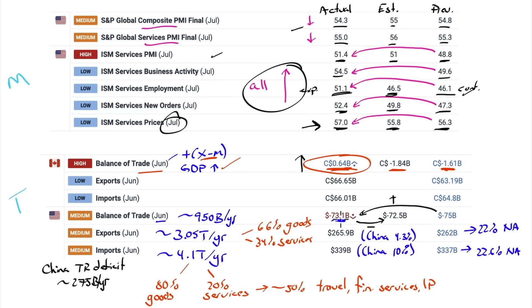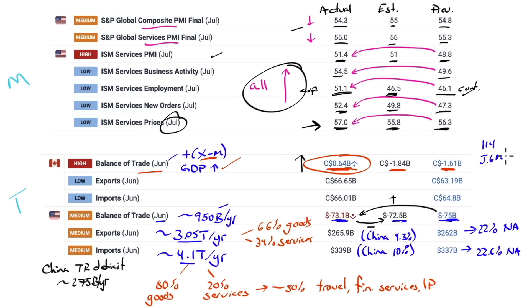The US trade deficit runs about $950 billion a year. Exports are about $3 trillion, imports about $4 trillion, so there's a lot of activity below the surface. Same with jobs numbers - when we say 114,000 jobs were created, under the surface you have something like 5.6 million exits and 5.7 million new hires. So it's not just 114,000 people got a job - the economy added 114,000 incremental jobs, but there's lots of churn under the surface.